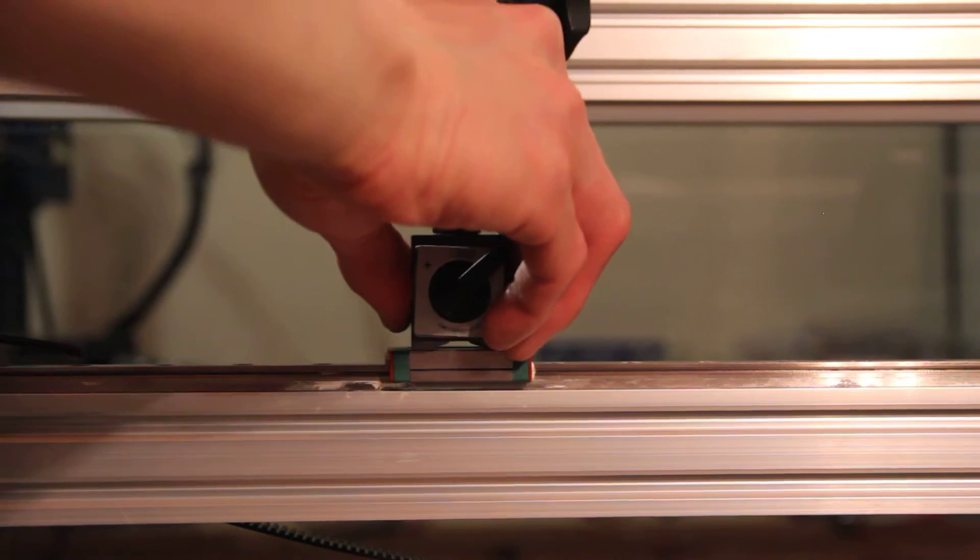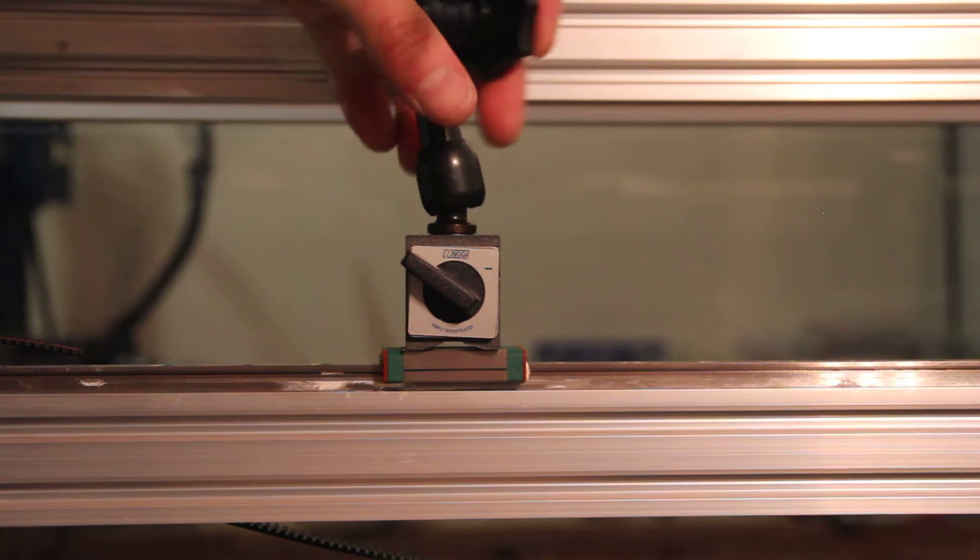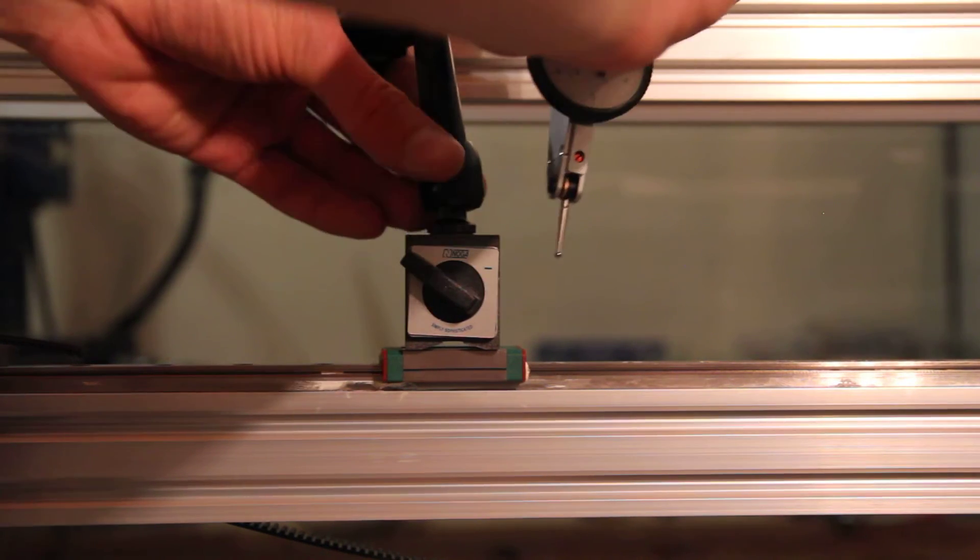So what I'm gonna do is put this test indicator in, and what that's gonna let me do is actually get a visual measurement on just how much backlash we're getting.